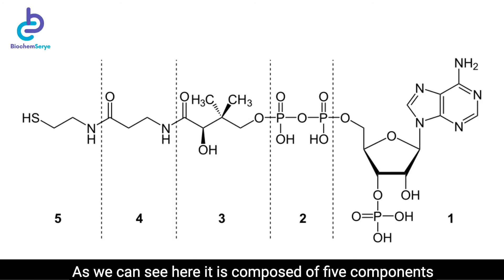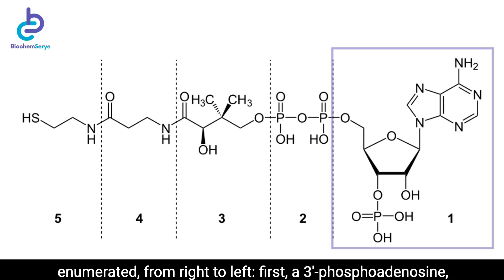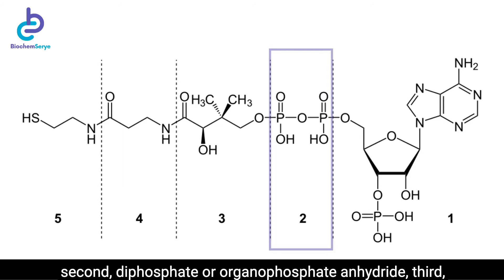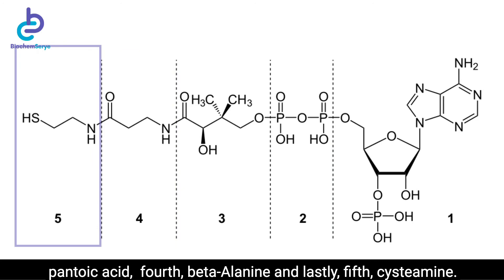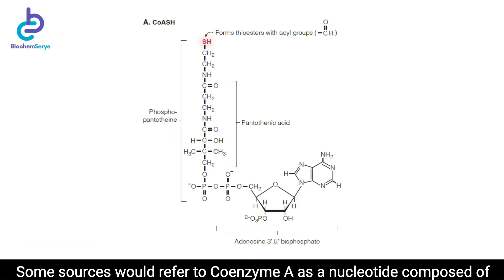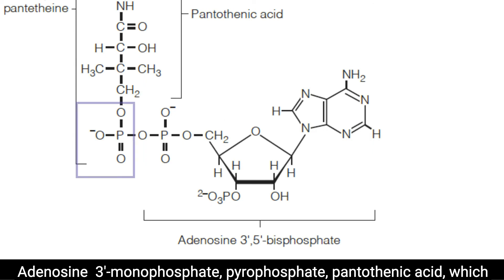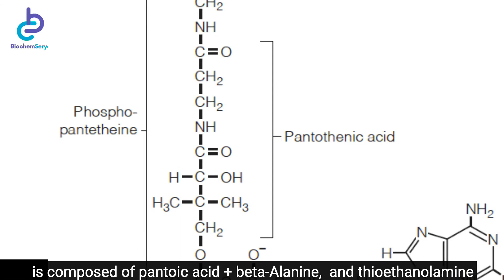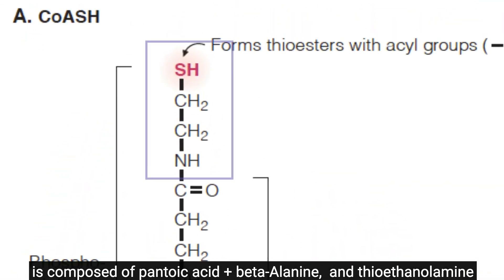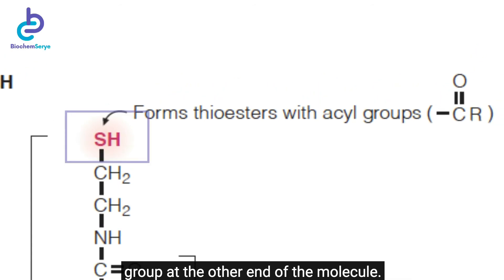As we can see here, it is composed of five components enumerated from right to left. First, a 3'-phosphoadenosine. Second, diphosphate or organophosphate anhydride. Third, pantoic acid. Fourth, beta-alanine. And fifth, cysteamine. Some sources refer to coenzyme A as a nucleotide composed of adenosine 3'-monophosphate, pyrophosphate, pantothenic acid — which is composed of pantoic acid plus beta-alanine — and thioethanolamine. The active site of coenzyme A is a sulfhydryl group at the other end of the molecule.